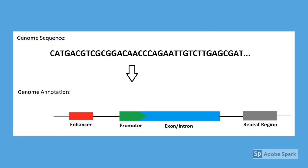Through the process of genome annotation, this DNA sequence is converted into the display seen below. From this you can see much more about the position of key elements within the genome, such as the enhancer, the promoter site, the location of exons or introns and repeat regions.